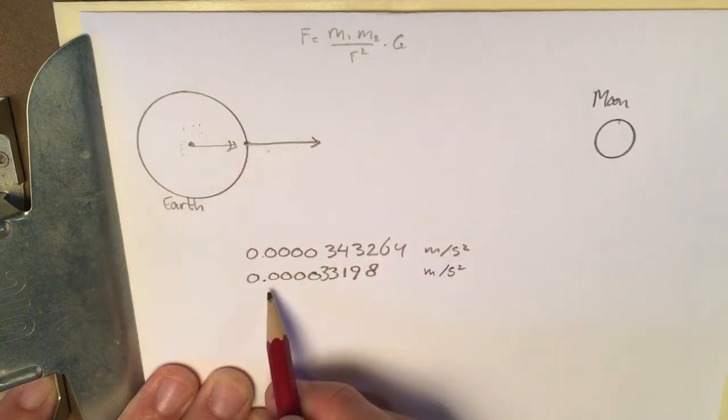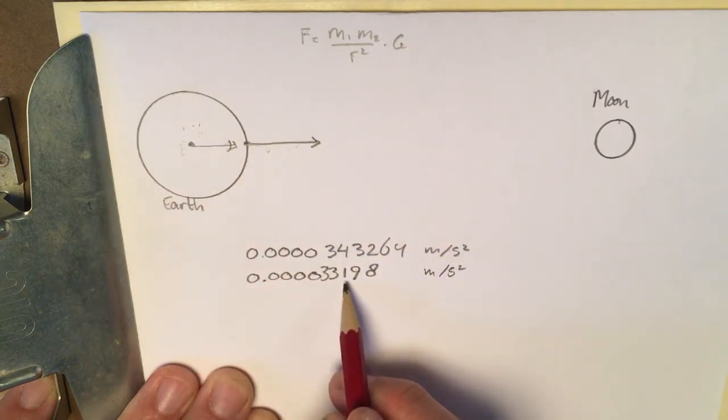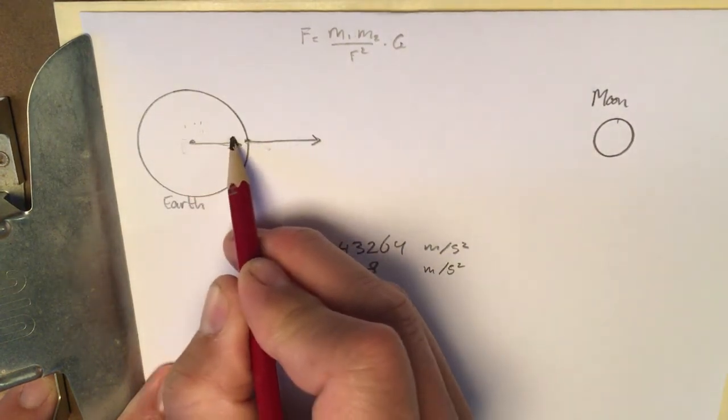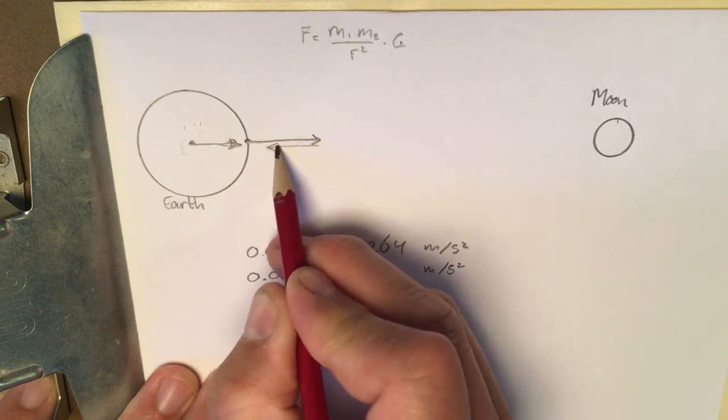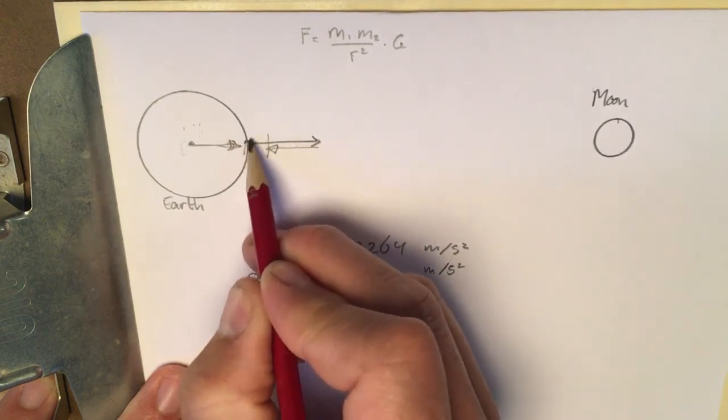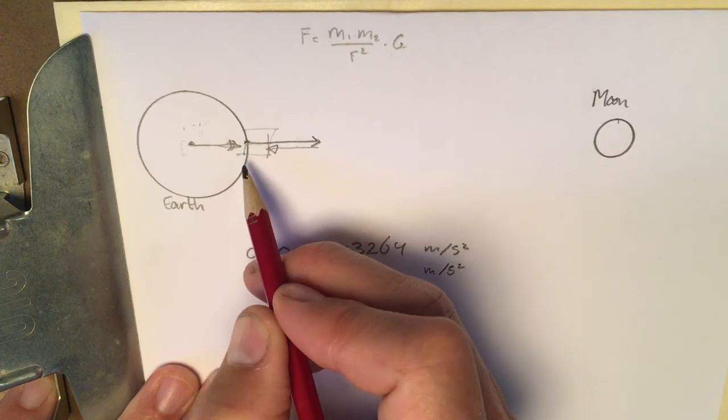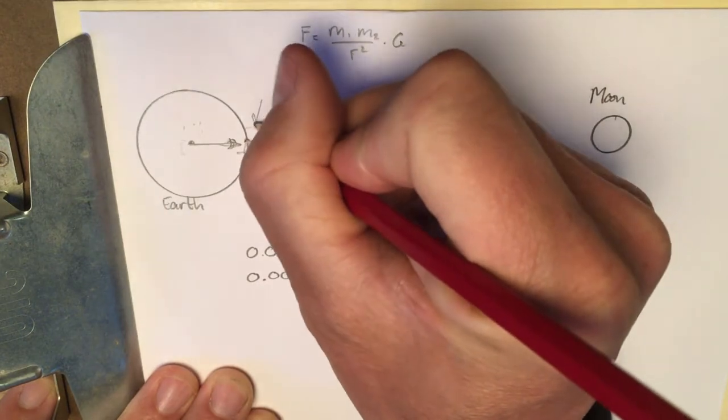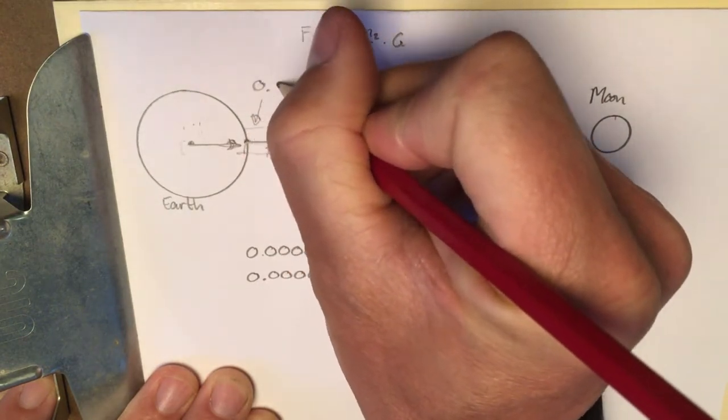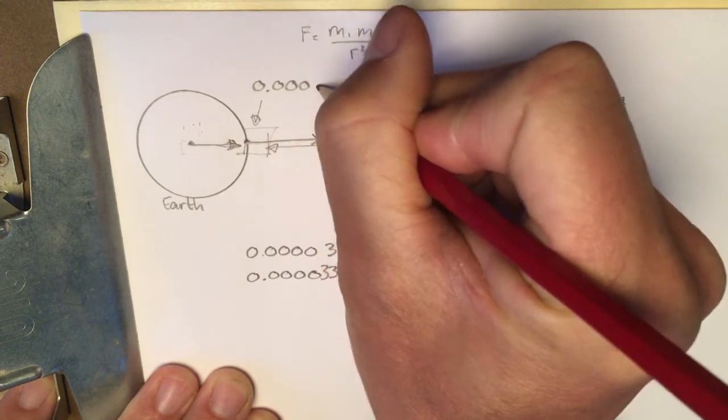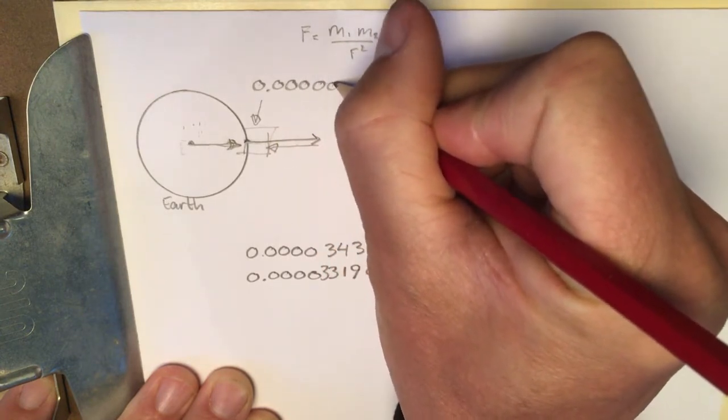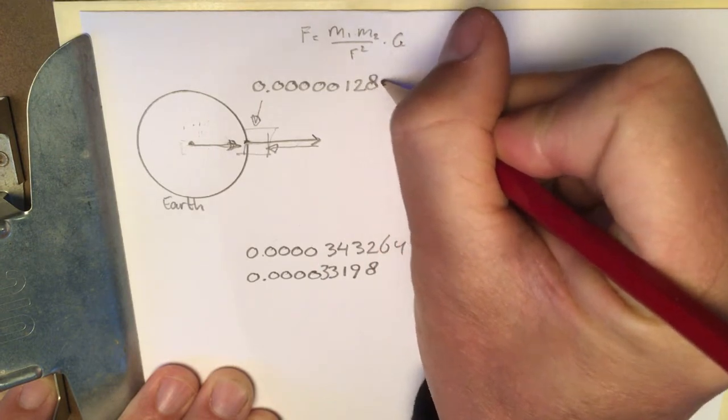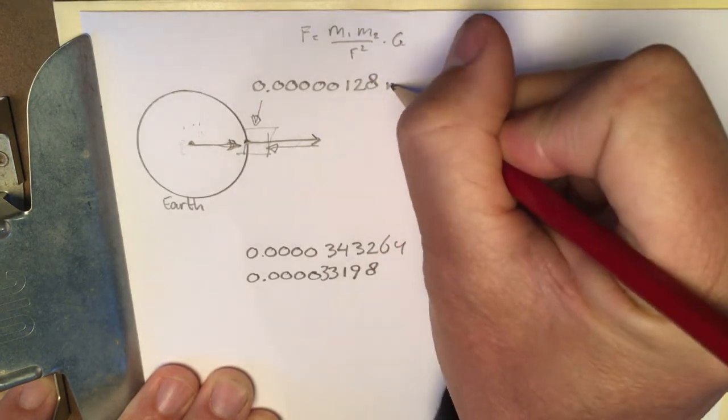And if you compare that to the acceleration of the earth, which is, because it's a little bit further away, a little smaller, then that would be 0.00003198. No, sorry, I got that wrong. There's supposed to be another 3 in there, meters per second squared. So this being the 3, 4, 3, 2, 6, 4. This being the 0, 3, 3, 1, 9, or 8. And to subtract that, you just basically take this vector here, turn it around, and put it there. And then that's your difference. And the magnitude of that difference is actually, this here is 0.0000128, roughly, meters per second squared.